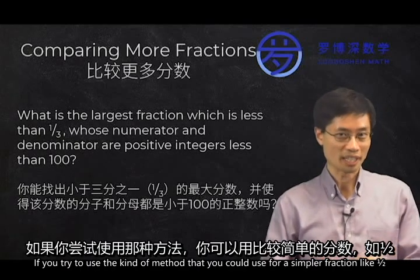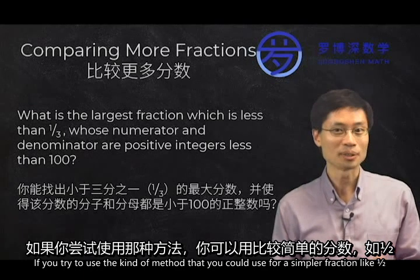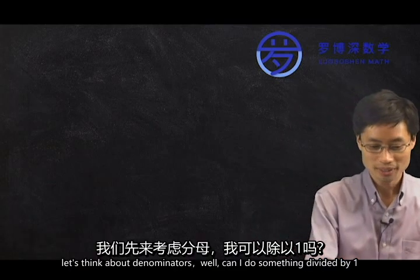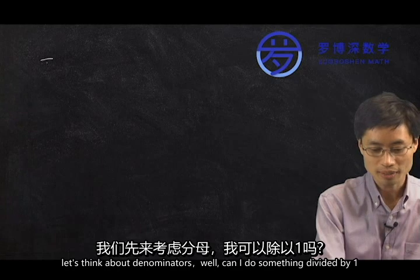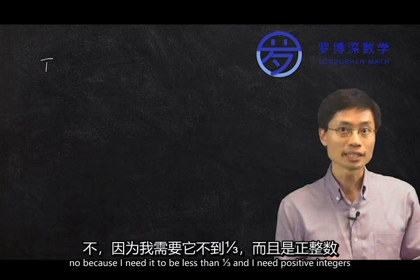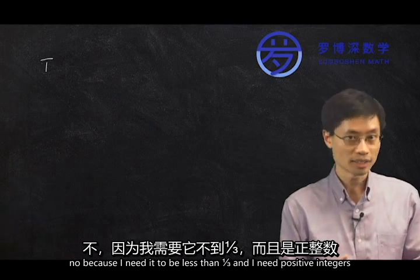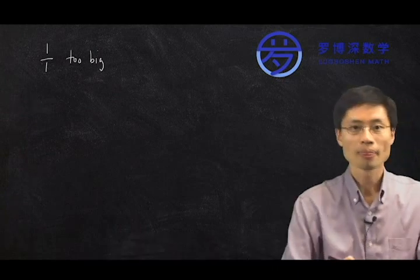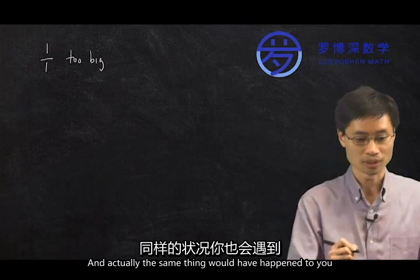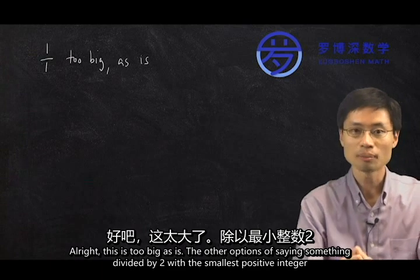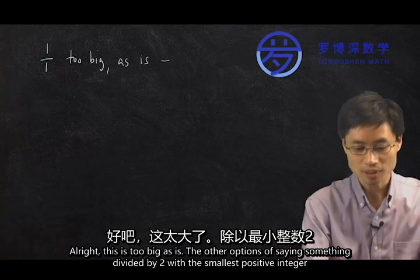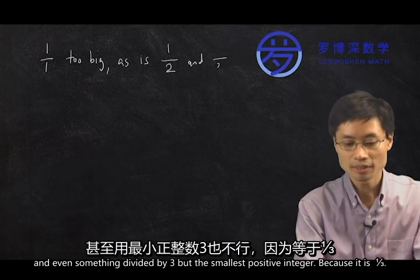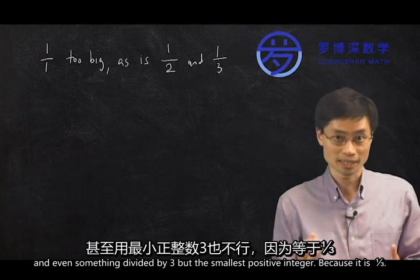If you try to use the kind of method that you could use for a simpler fraction, like one-half, you would think about denominators. Could I do anything with something divided by one? No, because I need to be less than one-third, and I need positive integers. My smallest positive integer is one, and that is already too big. The same thing happens with something divided by two, and even something divided by three with the smallest positive integer, because that is one-third.